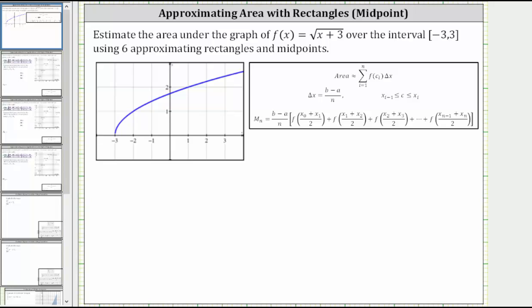So let's first mark off the closed interval from negative three to positive three, which is here on the left and here on the right. The next step is to determine the width of each sub-interval by determining delta x.